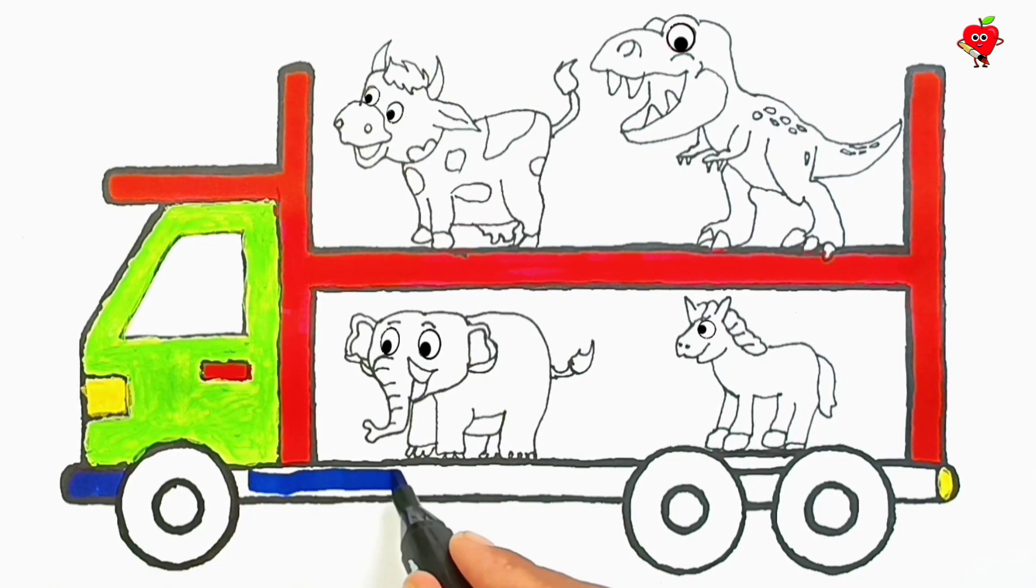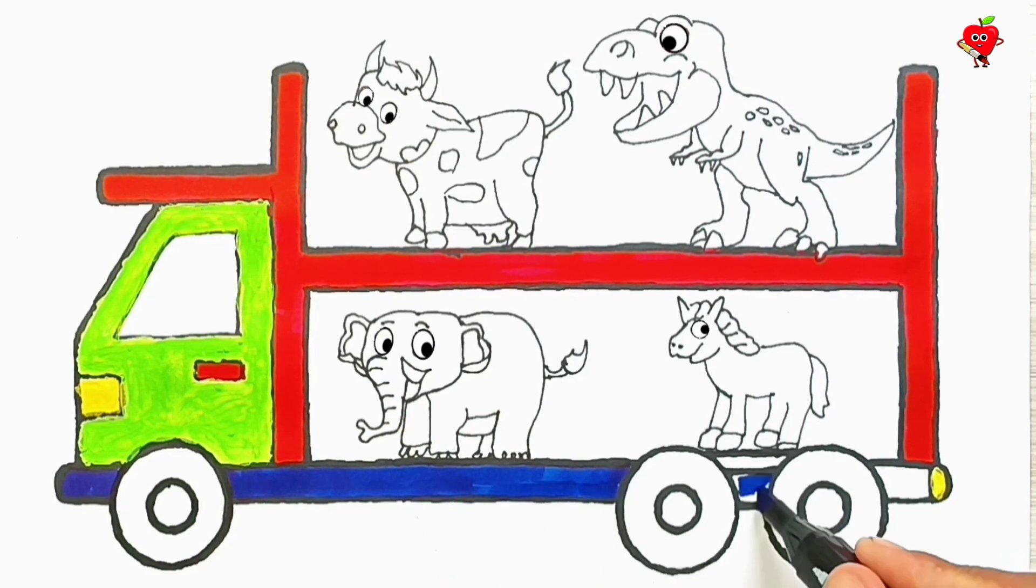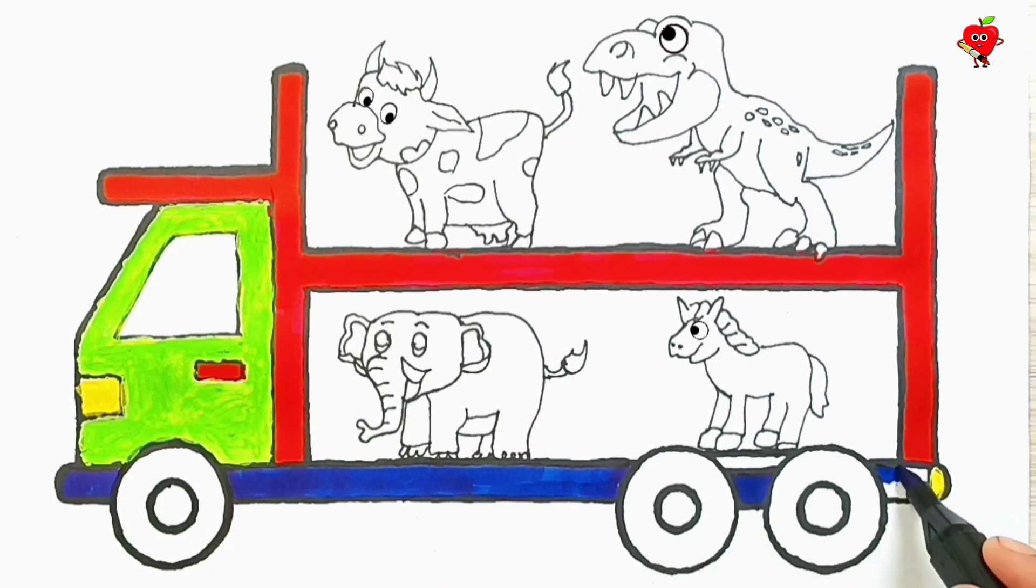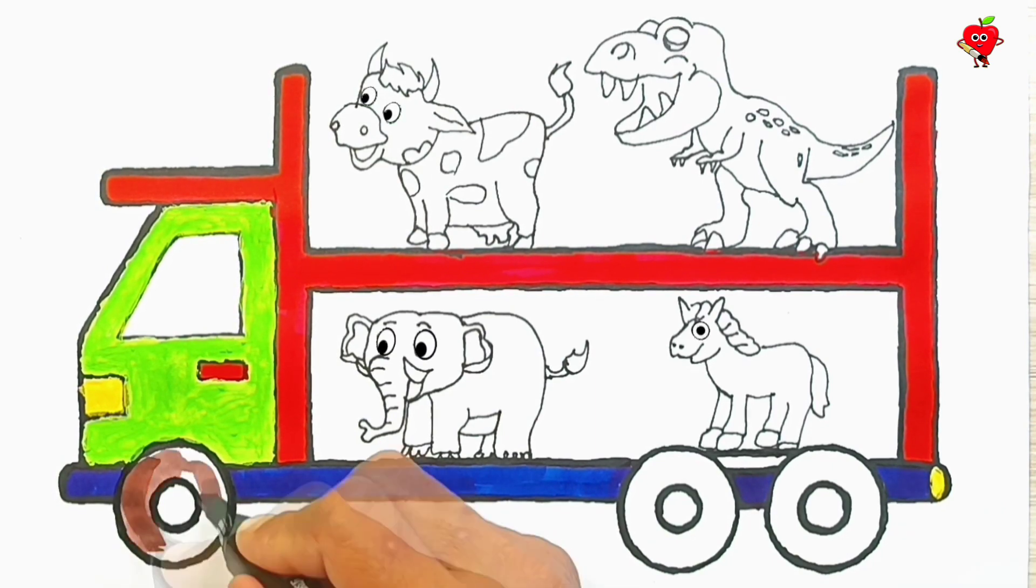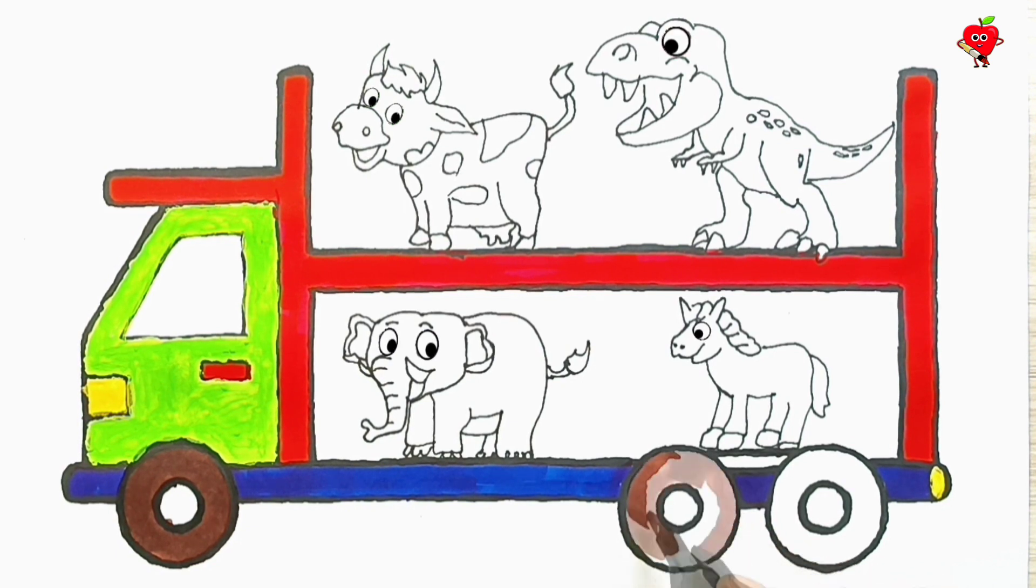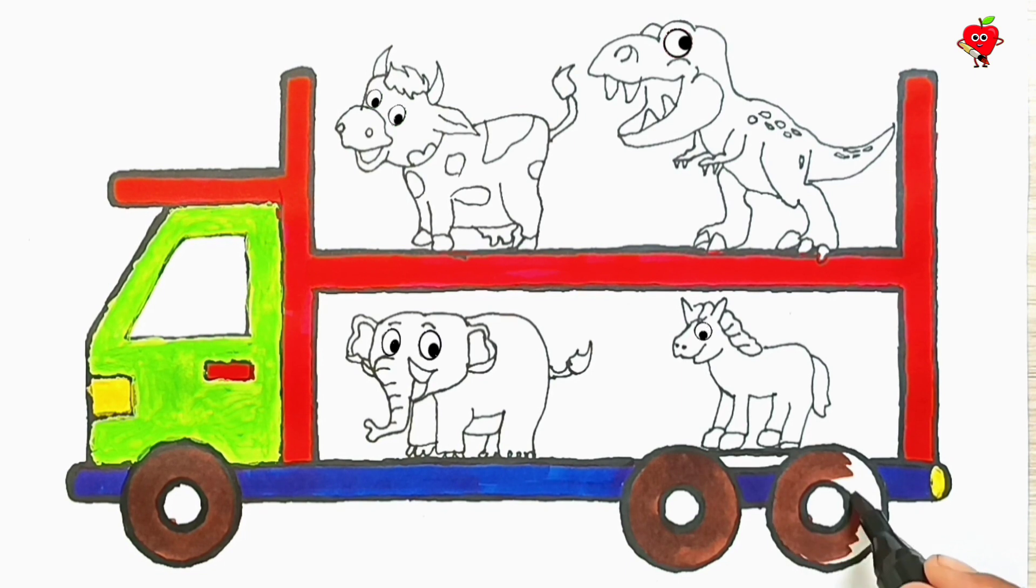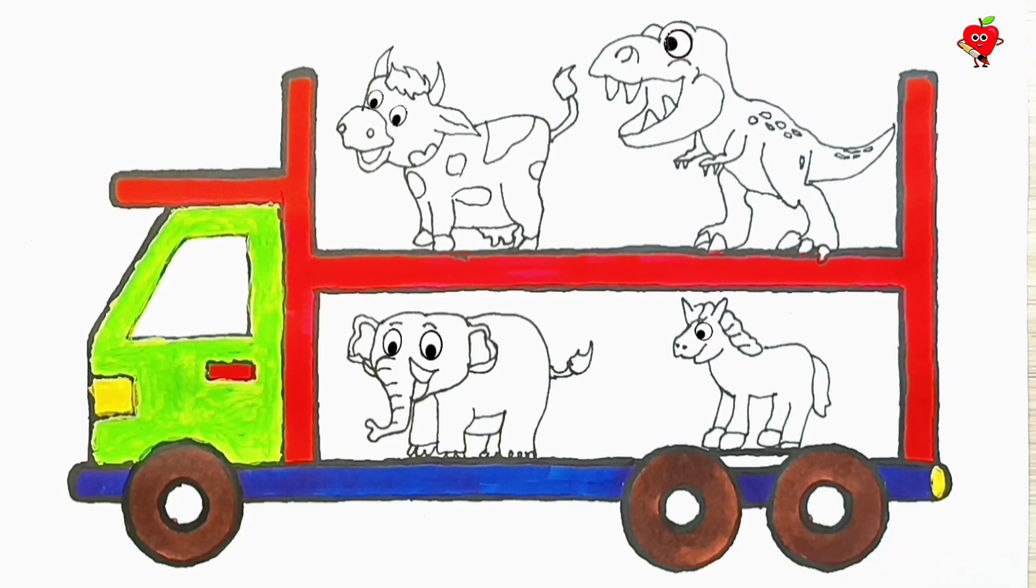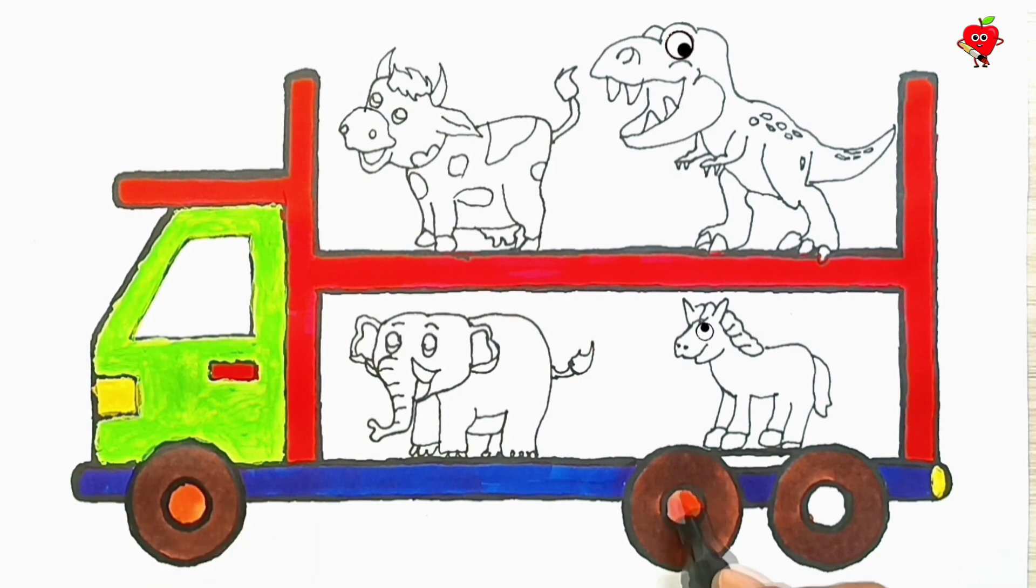Blue. Well, for the chassis we can color it blue. Okay, now it's just a matter of coloring all the wheels brown. Orange for the shaft. Finished.